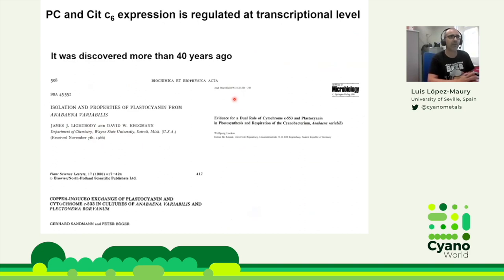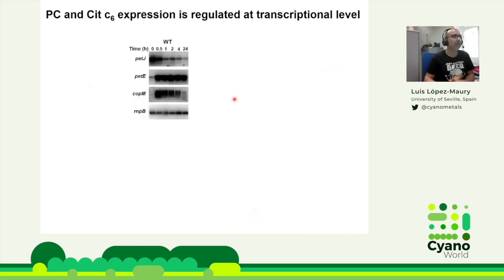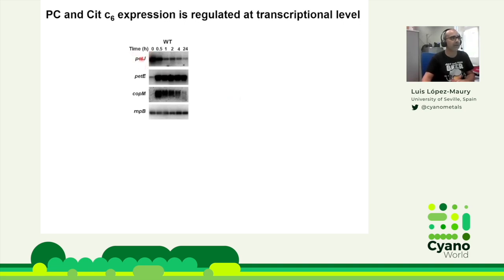Plastocyanin is expressed when copper is present in the media, while cytochrome C6 is expressed when copper is absent. This regulation was described long ago to occur mainly at the transcriptional level. In the absence of copper, the PETJ gene encoding cytochrome C6 is expressed, and this expression is shut down when copper is added. At the same time, the PETE gene encoding plastocyanin is induced.